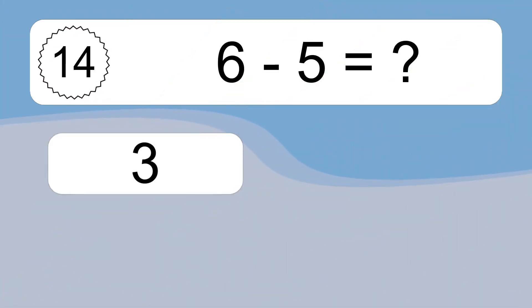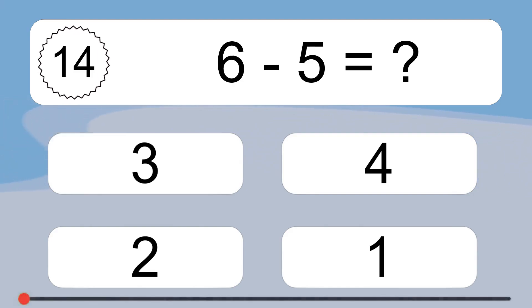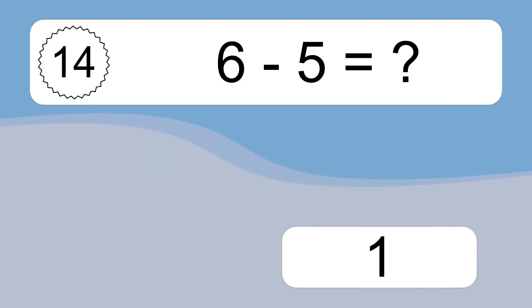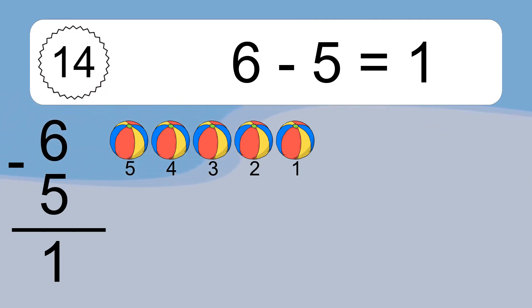6 minus 5 equals what? 6 minus 5 equals 1. Let's count it: 5, 4, 3, 2, 1.